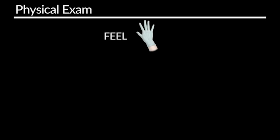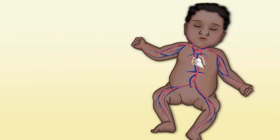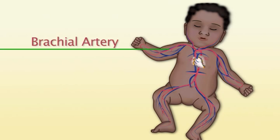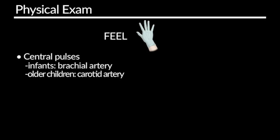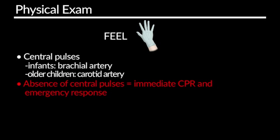Next we'll want to actually start to touch our patient — this would be the feel portion of your assessment. First you'll want to assess the pulses, starting with the central pulses. In infants, be sure to note that the best place to assess the central pulse is their brachial artery, in the upper more medial part of their arm. You can also palpate for a femoral pulse, which is located in their groin. In older children, you will want to feel for a carotid pulse in their neck. It is imperative to note that the absence of central pulses indicates the need for immediate CPR and you should call for emergency response.